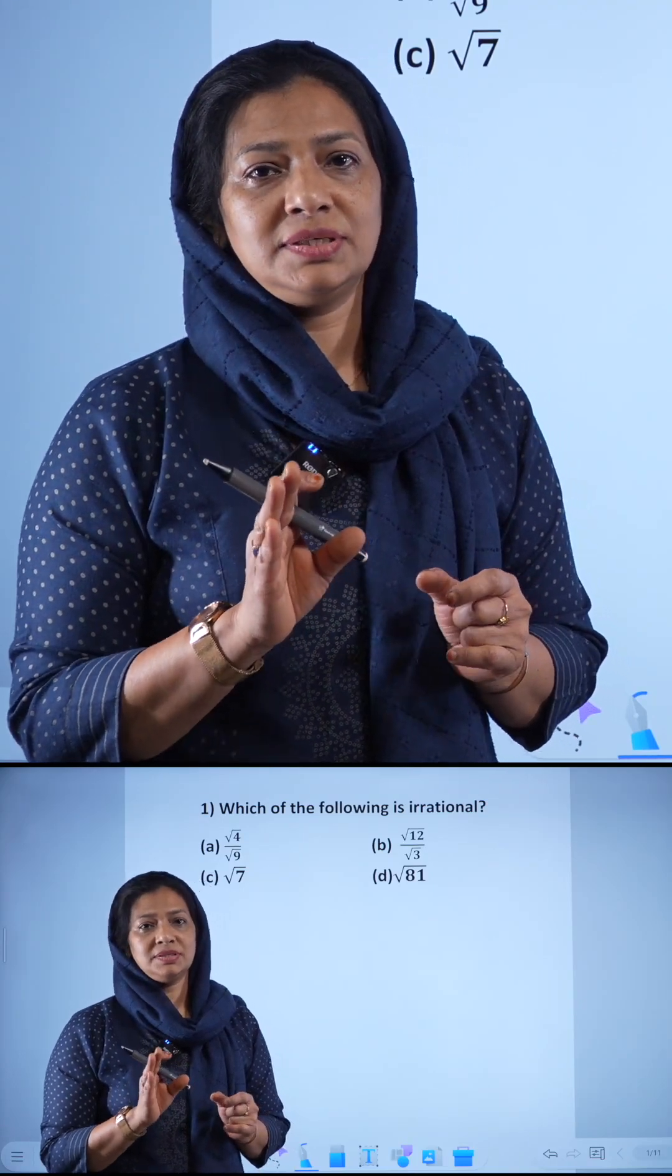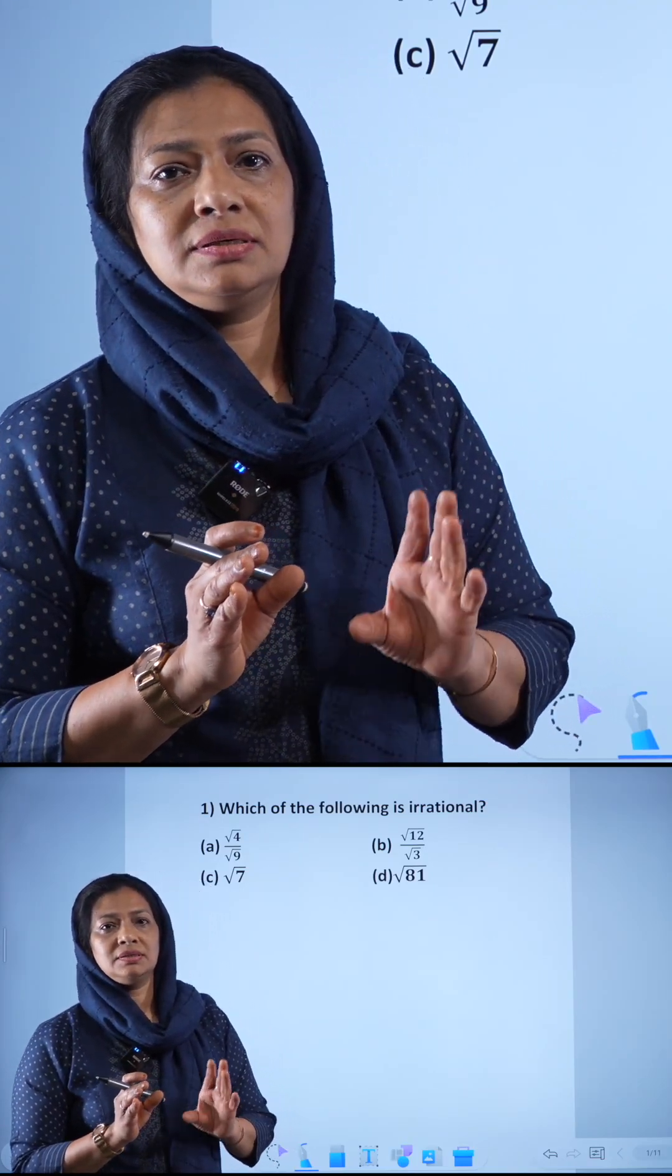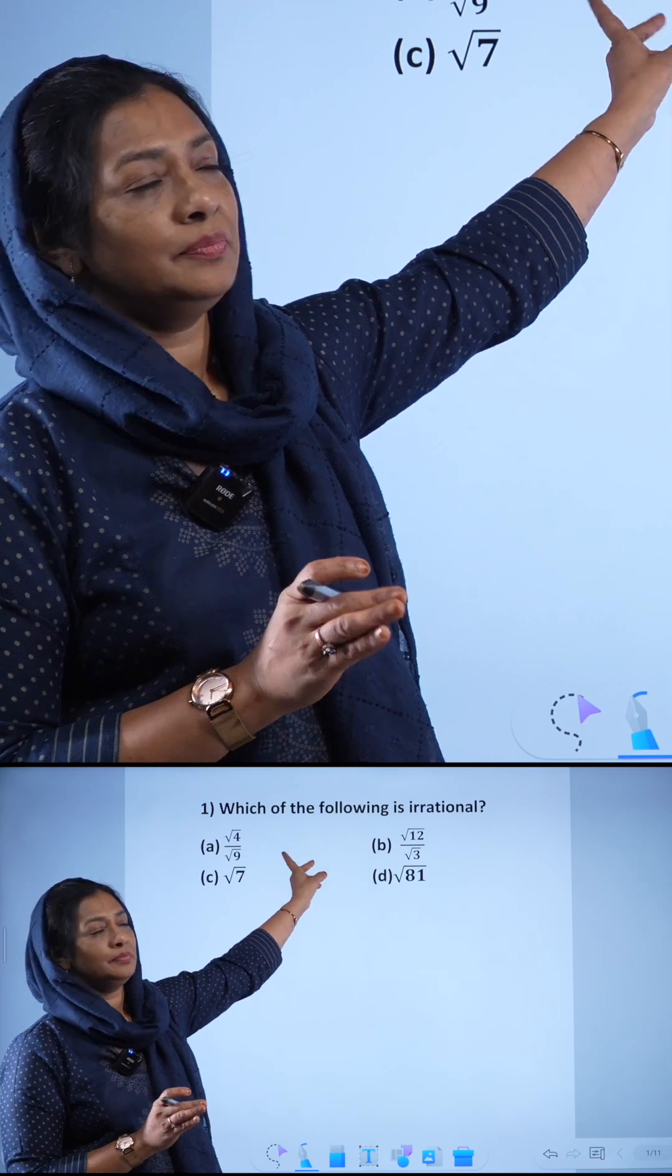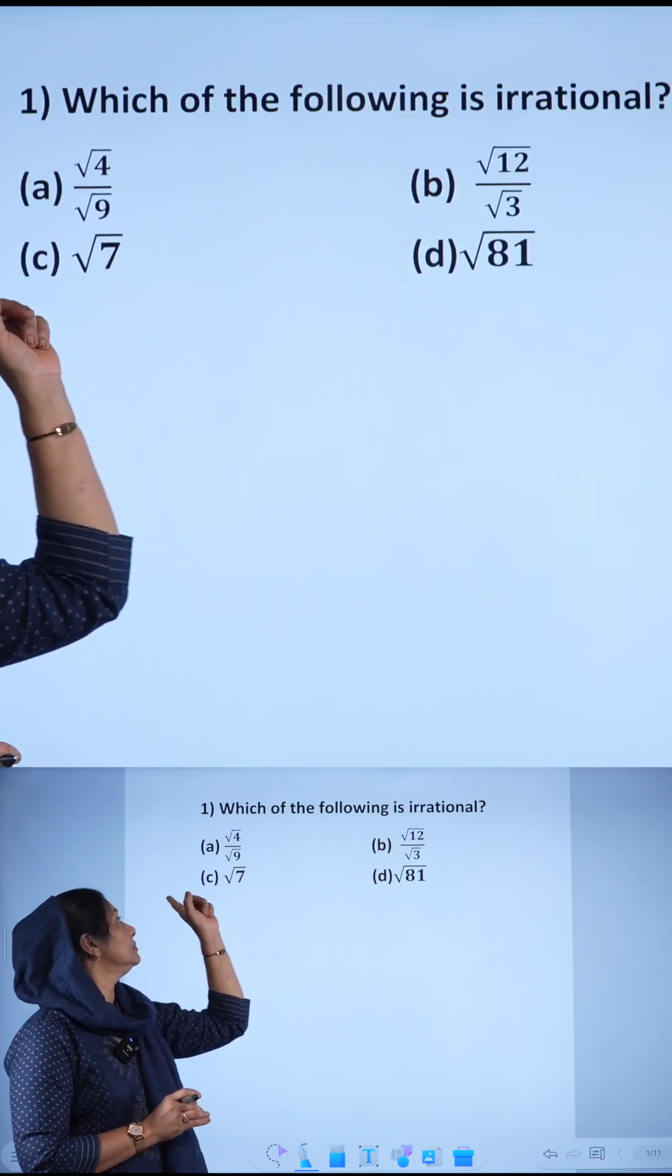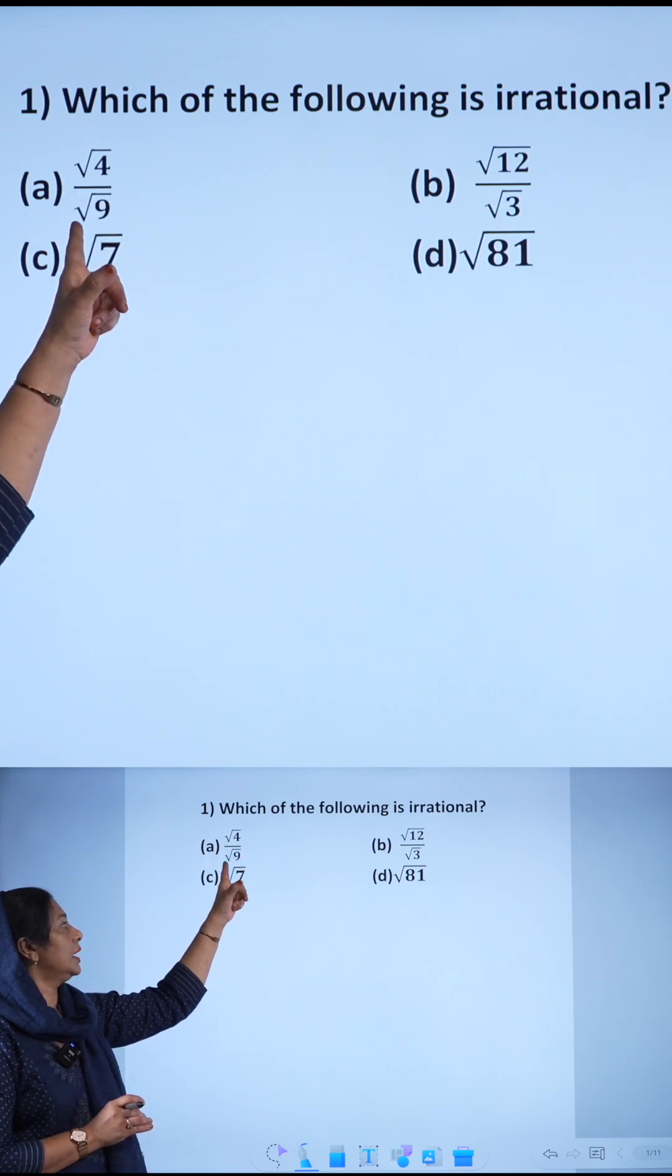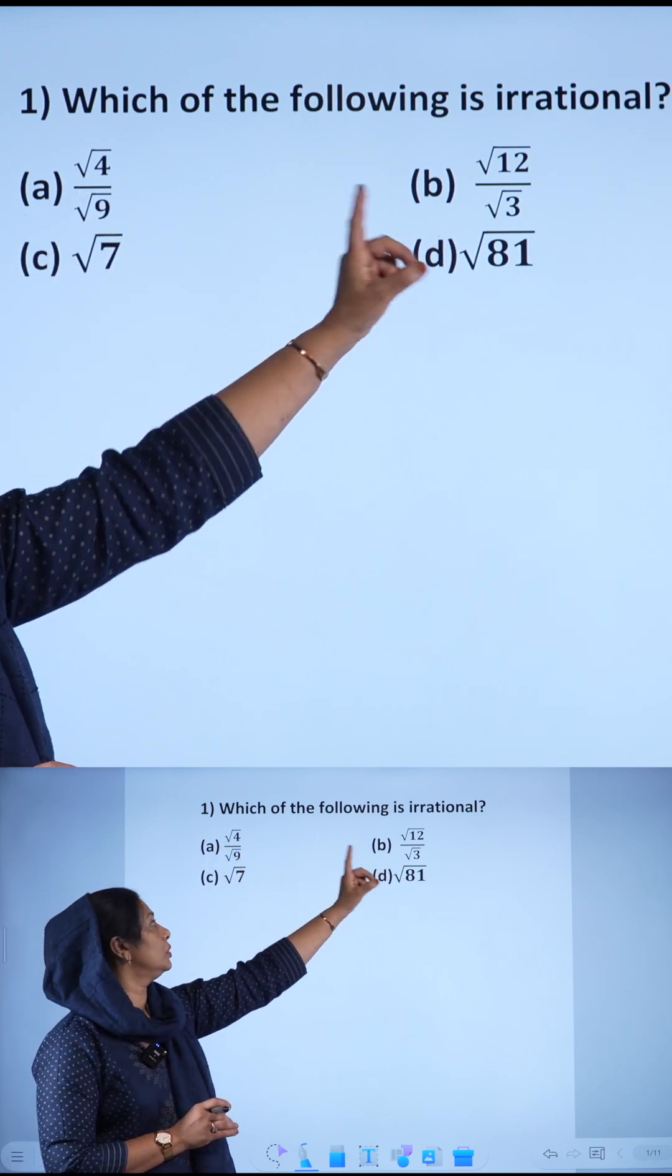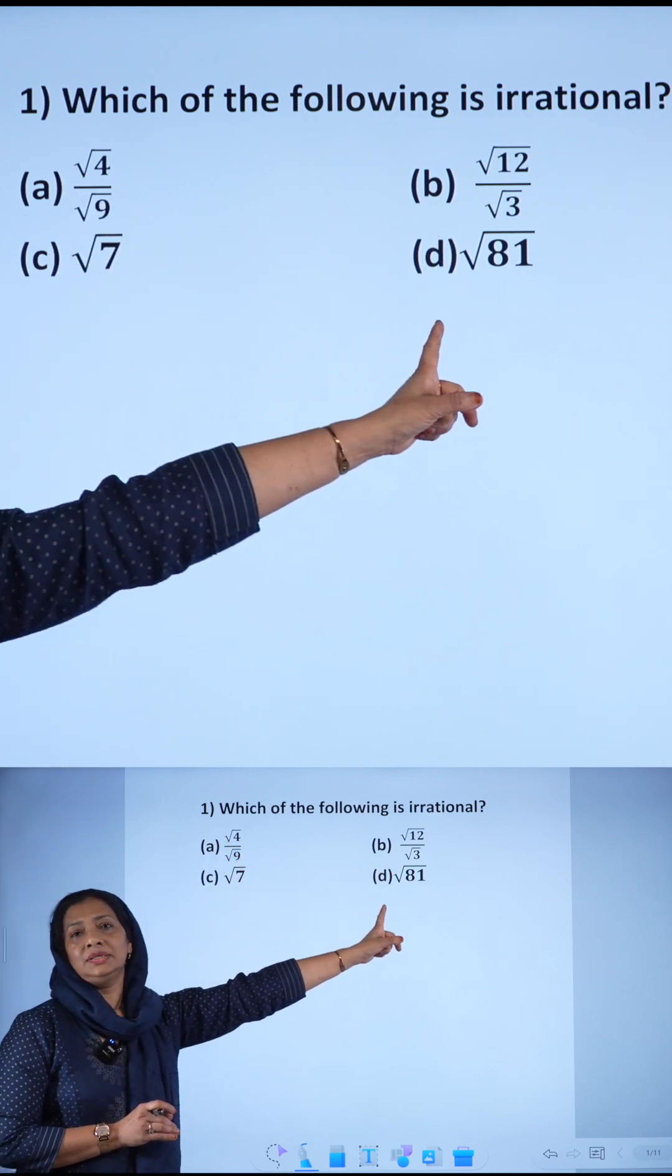Today, I am going to take the chapter number system. Let us start the first question here: which of the following is irrational? Root 4 by root 9, root 12 by root 3, root 7, and root 81.